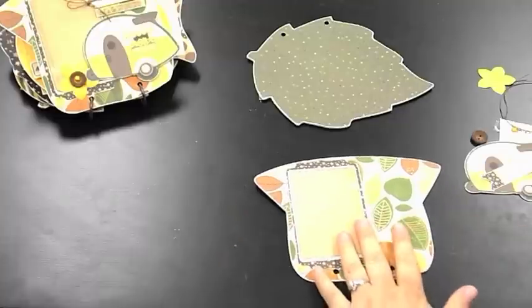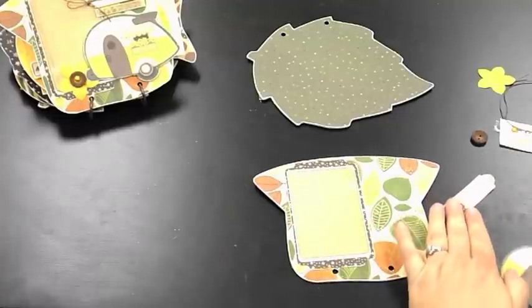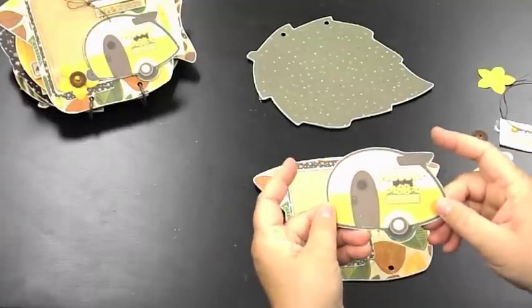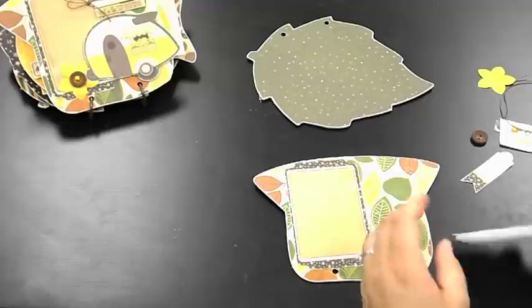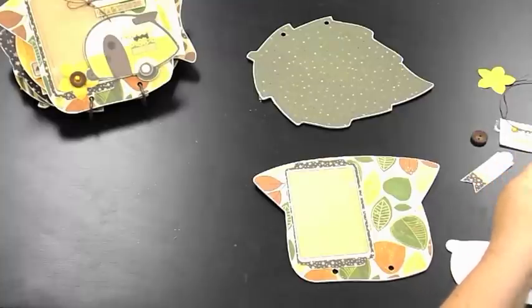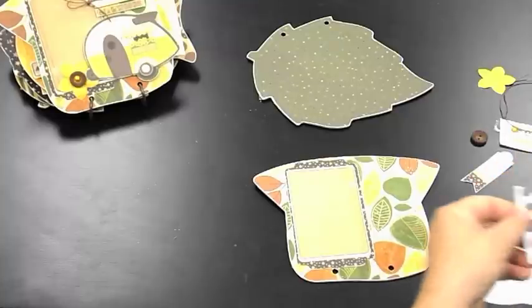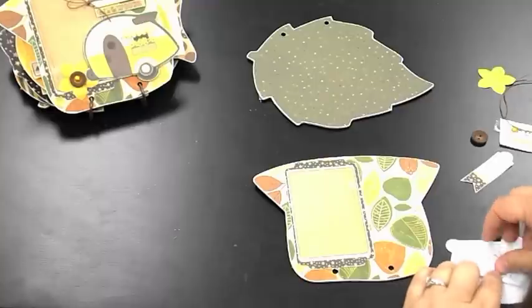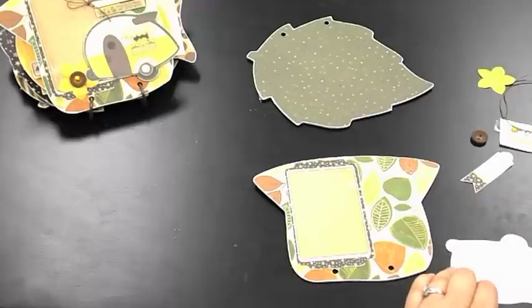Stick that on and then my favorite, favorite piece in the Noteworthy set. This cute little darling camper with these little sunflowers. I'm so in love with this. This one we have to make sure we get some dimension, so I'm going to throw some more pop dots on the back of it so he stands up off the page.